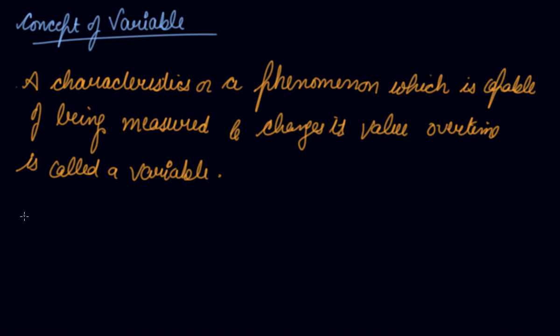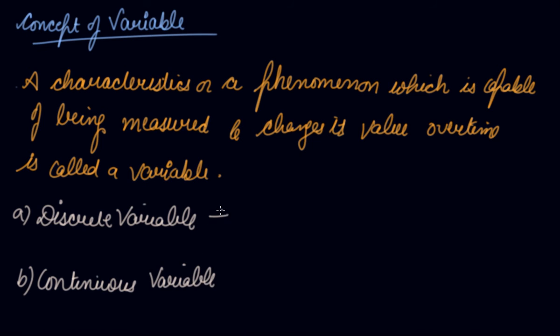Now there are two types of variables. A is your discrete variable, B is your continuous variable. See, when the value of your variable is in complete numbers.